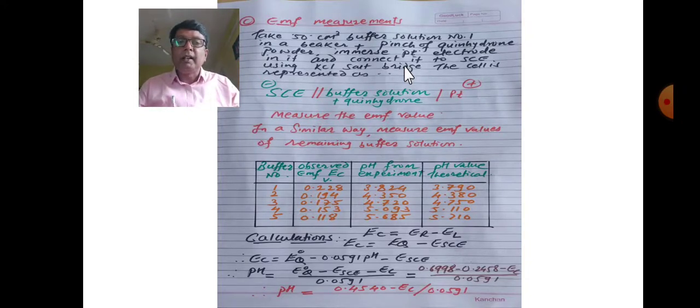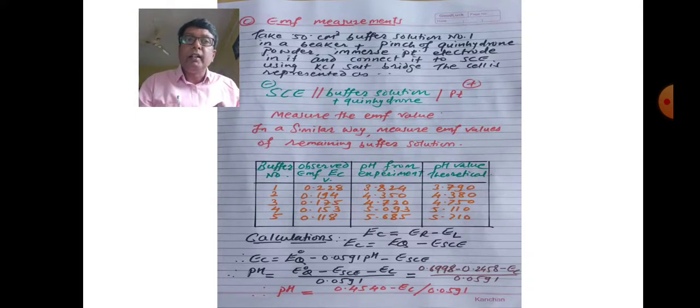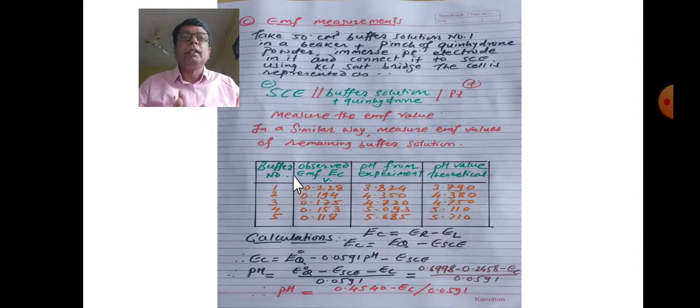Repeat for buffer solution numbers two, three, four, and five. Construct the cell for each buffer solution and take the readings. The experimental pH values obtained are: number one 0.228, number two 0.194, third 0.175, fourth 0.153, fifth 0.118. These are the experimental values.